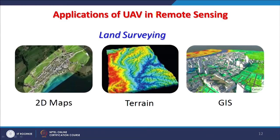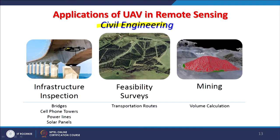Here are a few examples directly related to how UAVs are used in remote sensing. The first one is land surveying — 2D maps and digital elevation models can be created, and GIS or 3D mapping can also be done. In civil engineering, for infrastructure inspections of big bridges, cell phone towers, power lines, and solar panels, UAVs can be used. Feasibility surveys for transportation routes are also possible. Railways have also started using UAVs for maintenance and finding faults on lines.